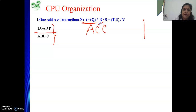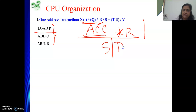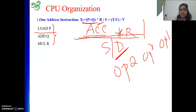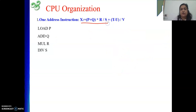Next, we need to multiply by R. Since the result of P+Q is already in the accumulator, we can directly write MUL R. The accumulator acts as both source and destination. Then we divide by S: write DIV S. The previous result in the accumulator gets divided by S, and the result remains in the accumulator.